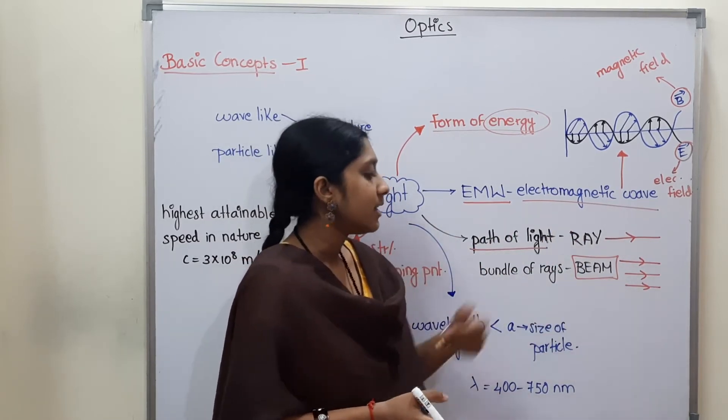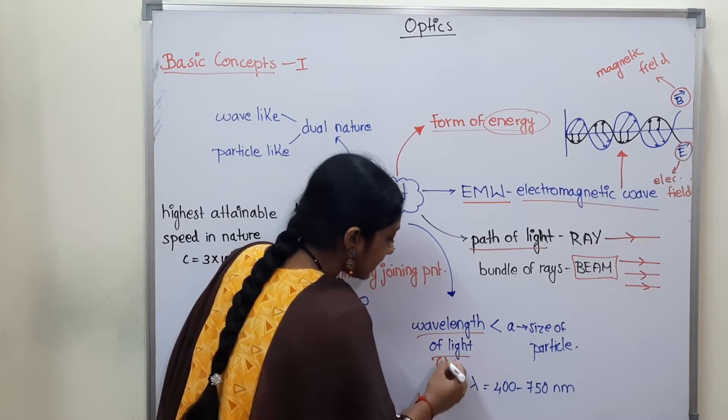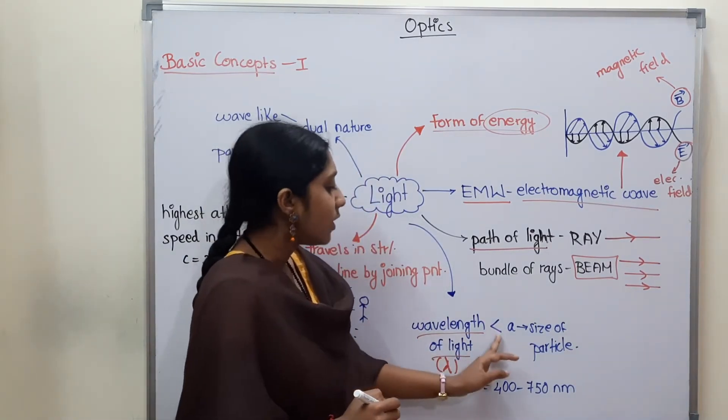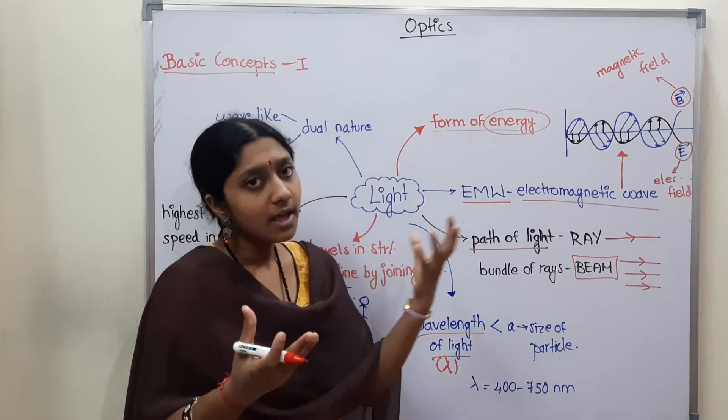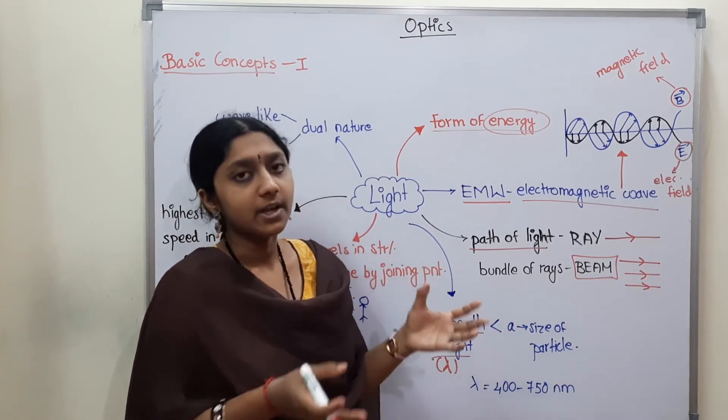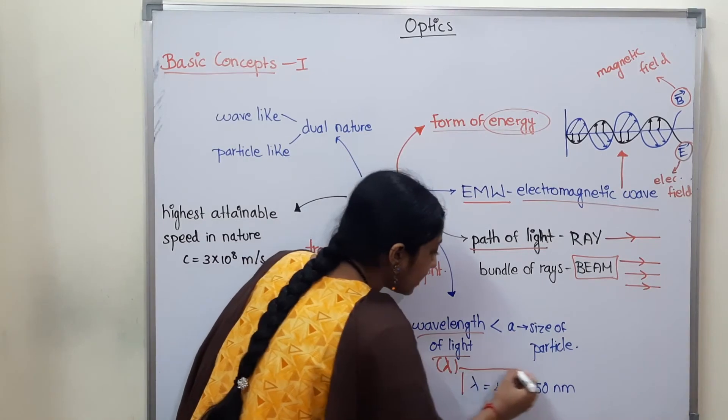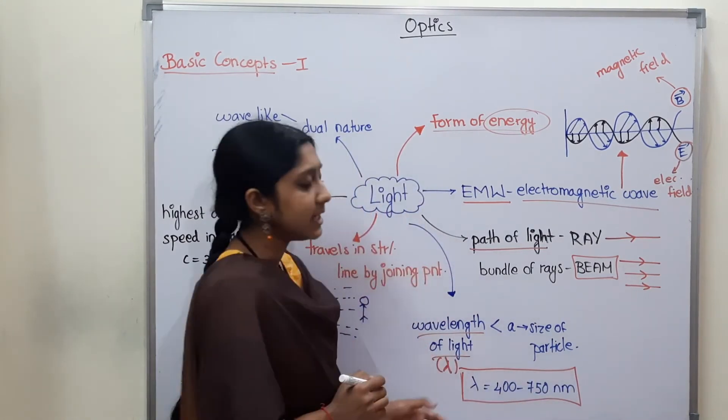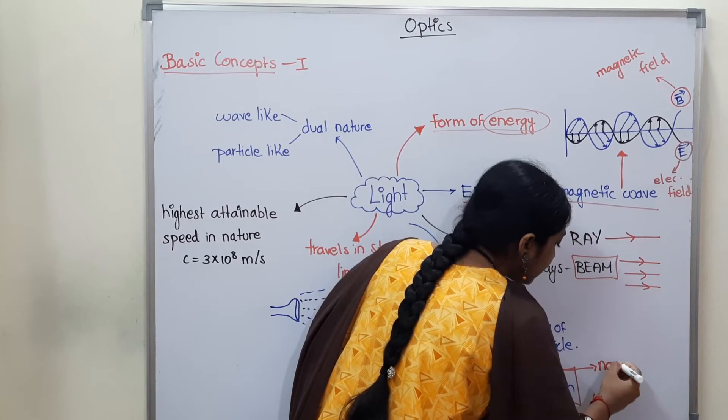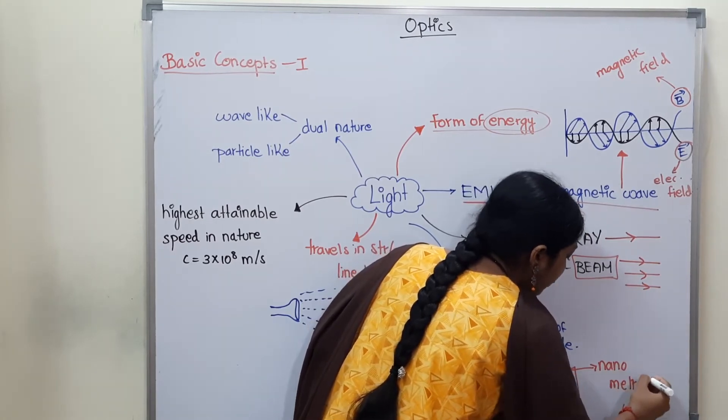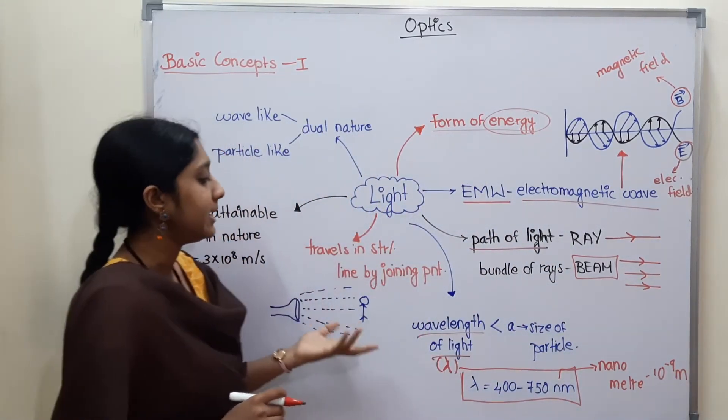Okay, next wavelength of light. Wavelength of light is nothing but lambda. Lambda is wavelength. Wavelength is always less than a - the a means size of particle. So particle size and wavelength of light. So this means the wavelength of light is smaller when compared to size of particle. And the wavelength is 400 to 750 nanometer. This is the range of wavelength of light. This means nm is nothing but nanometer - 10 power minus 9 meter. Okay, so wavelength of light is 400 to 750 nanometer. Next, light